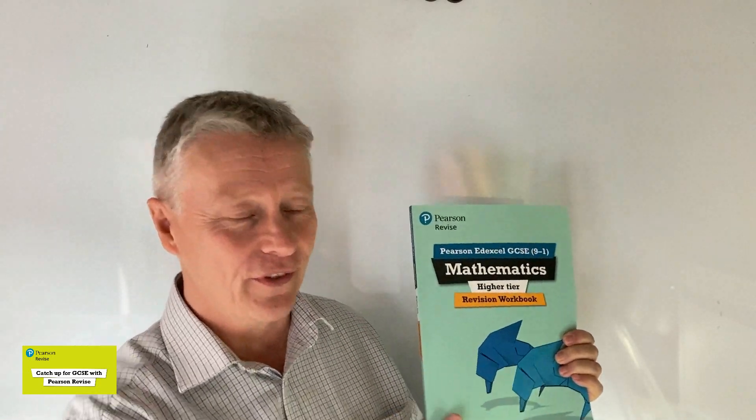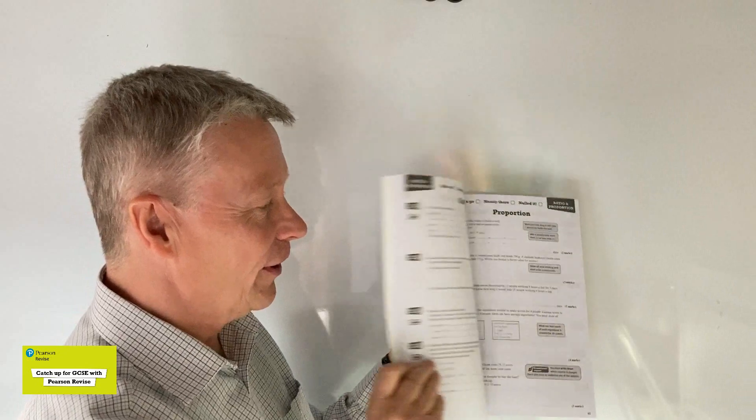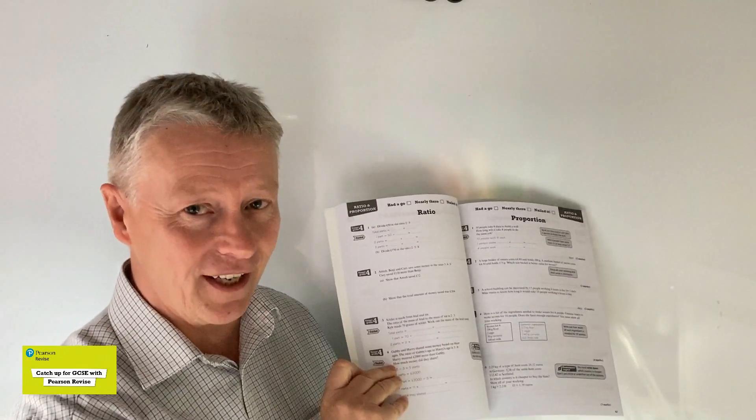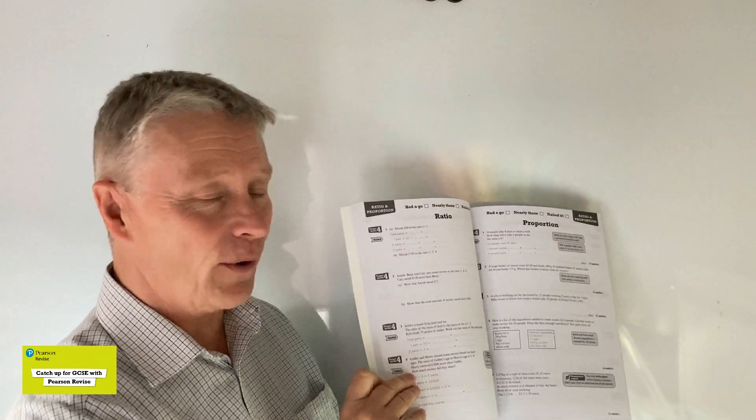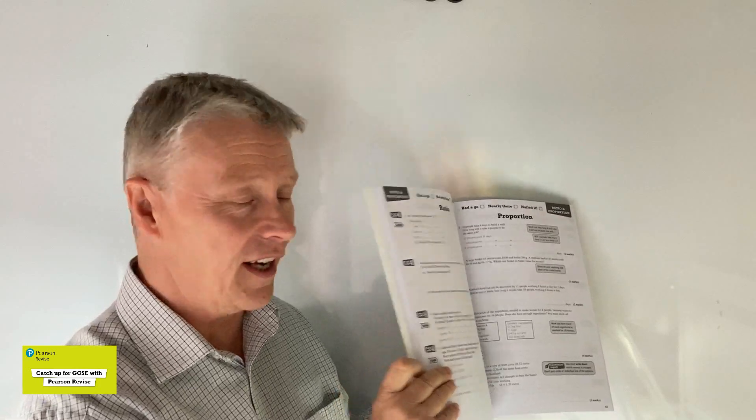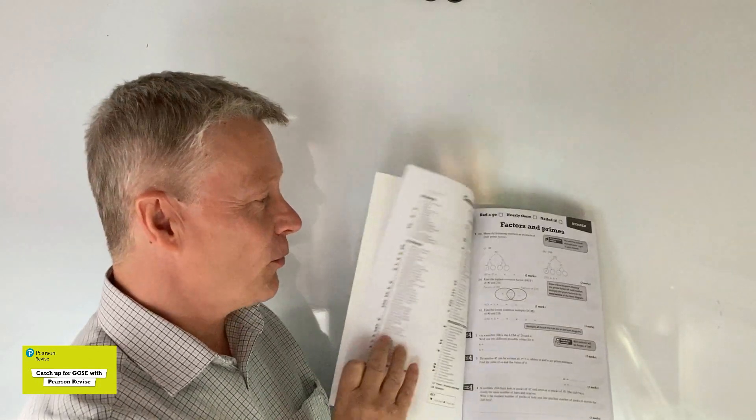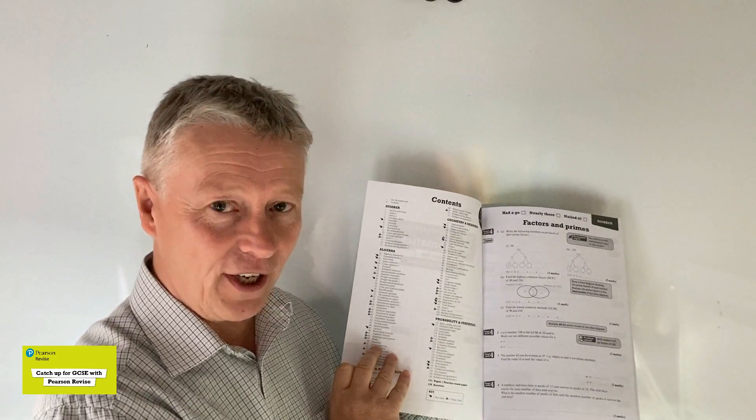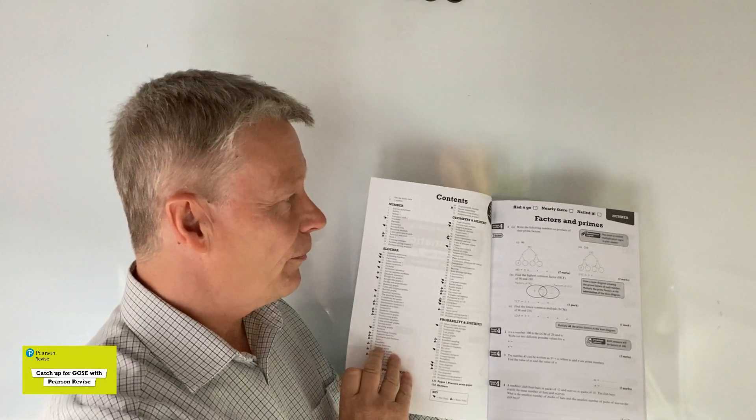There is an accompanying guide that goes with this and it's absolutely full of different questions which are graded and also based on the kind of questions you're going to get at GCSE. So the plan really is to start working through this book from page one and at the moment this video we're going to look at question number two from factors and primes.